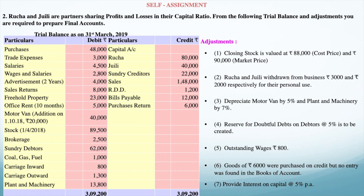The trial balance is as on 31st March 2019. Ucha and Julia are the partners and they are sharing the profit and losses in their capital ratio.